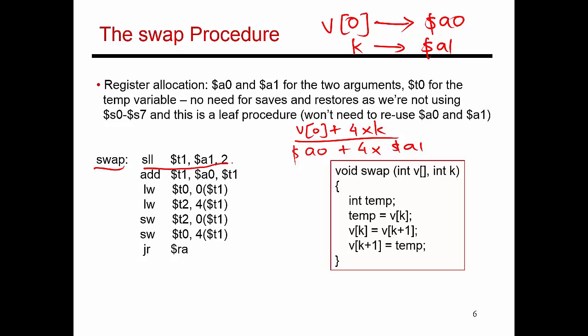This is what is happening here. I'm taking a1, shifting it to the left by 2, and that's the same as multiplying a1 by 4. Then I'm taking the temporary result t1, adding it to a0, and putting it into t1. Essentially t1 now contains the address of array element vk. So I bring that element into t0.